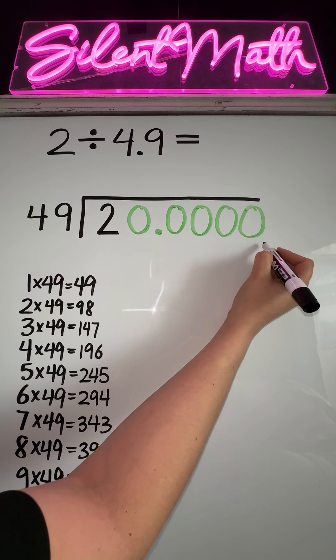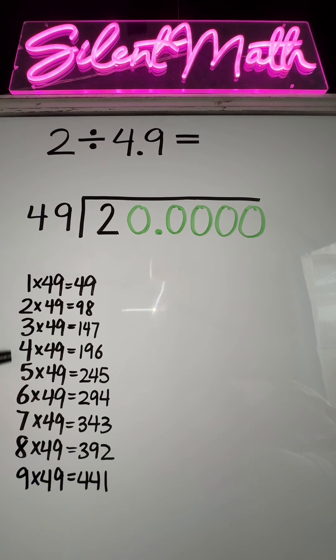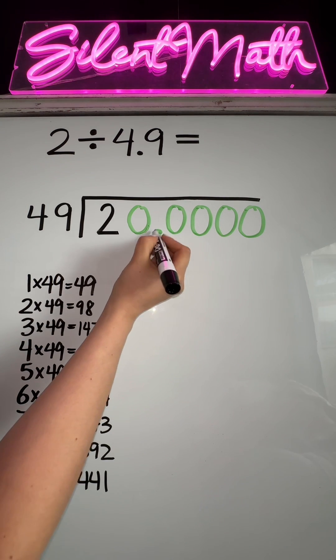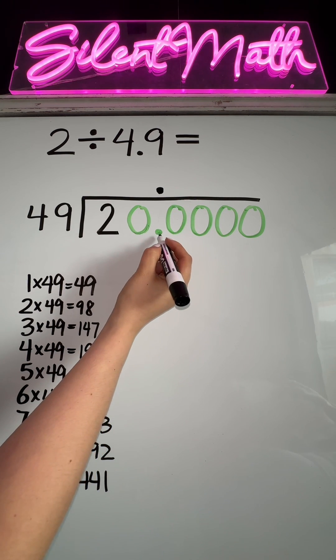I added a decimal with a few extra zeros. We might need them all, we might not. I also put some multiplication facts of our divisor because this will come in handy when dividing. From here, you're going to bring this decimal straight up into your quotient area, and you're just going to start dividing.